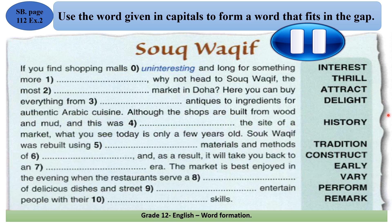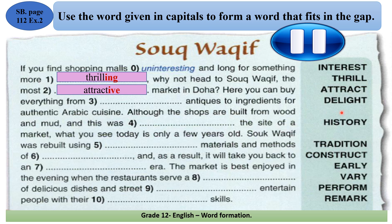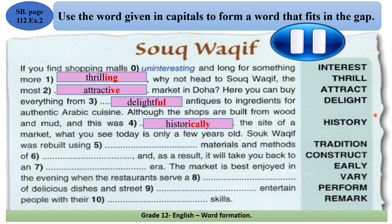Now let's check our answers. Number one: 'more ___' — I need an adjective from 'thrill' → 'thrilling'. Number two: 'the most marked' — I need an adjective from 'attract' → 'attractive'. Number three: 'antiques' (noun), 'delight' — I need an adjective from 'delight' to describe the noun → 'delightful'. Number four: describing a whole case, 'this was the site of a market' — we need an adverb from 'history' → 'historically'.